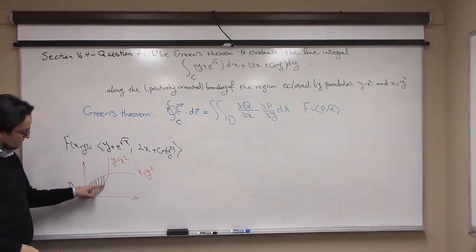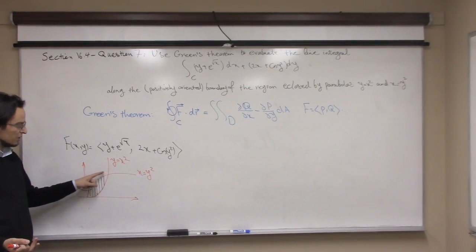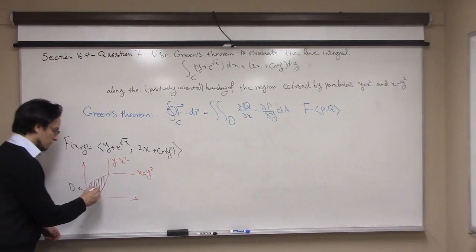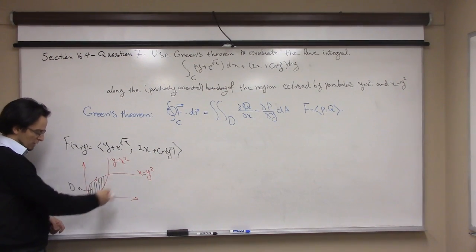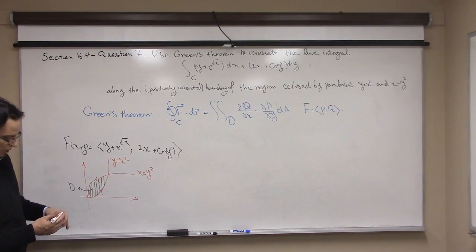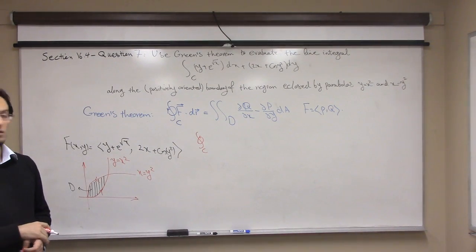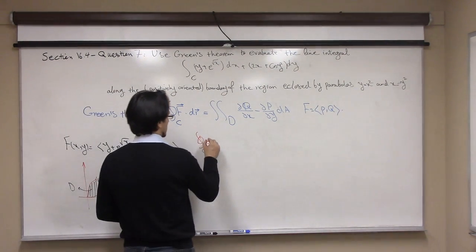The boundary is closed — it starts from a point and returns to the same point. It is simple, meaning it doesn't intersect itself at any point other than the endpoints. To make it positively oriented, I have to choose the correct orientation so the region stays to the left.